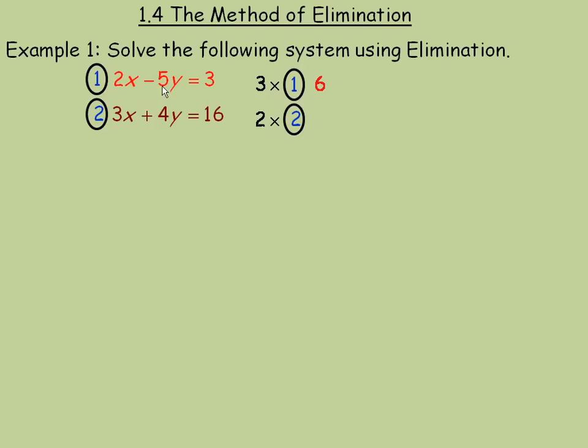Now, this means to multiply the whole first equation by 3, not just the 2x. So the 2x, the negative 5y, and the 3 all get multiplied by 3. So 2x times 3 is 6x. Negative 5y times 3 is negative 15y. 3 times 3 is this 9.